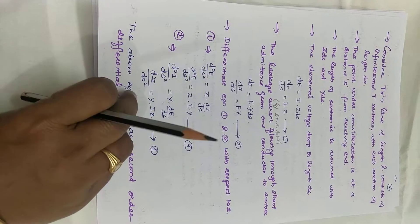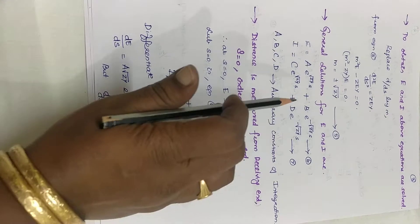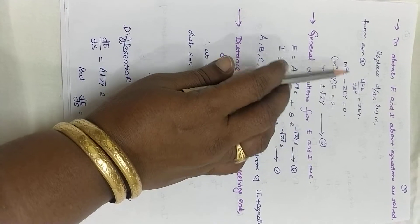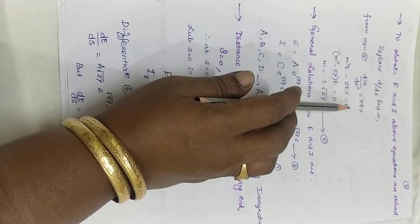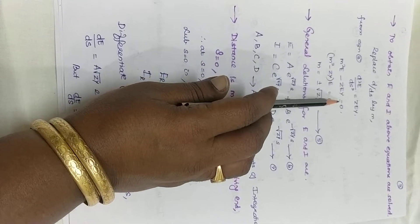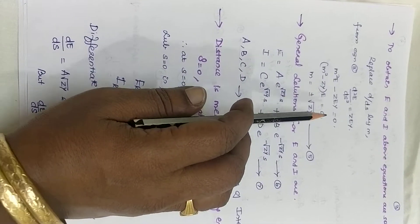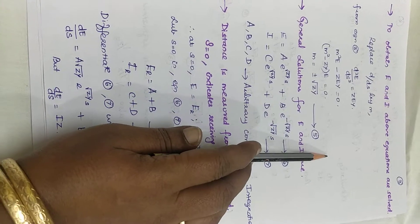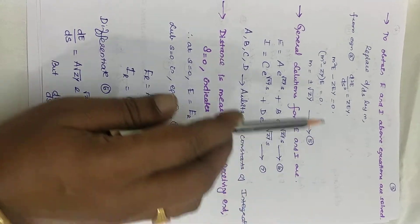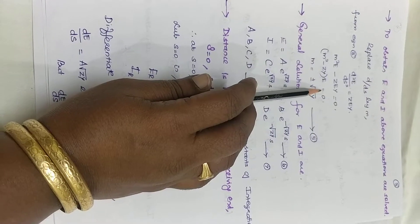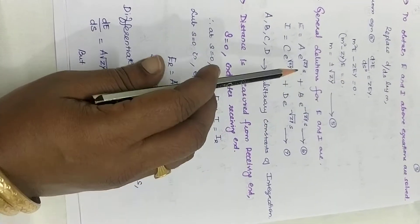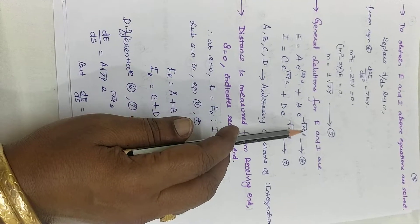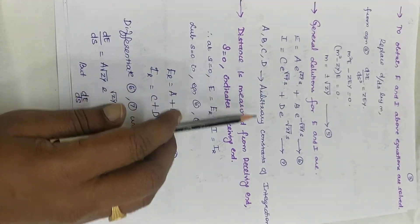Now we will solve these two second-order differential equations. Replace d/dS by M. So d²E/dS² equal to ZY·E can be written as M² minus ZY equal to 0, giving M equal to plus or minus root of ZY. The general solution is of the form A·e^(MX) plus B·e^(-MX). Rewriting for E and I: E equals A·e^(√ZY·S) plus B·e^(-√ZY·S), where A, B, C, D are arbitrary constants of integration.